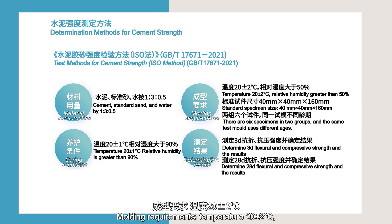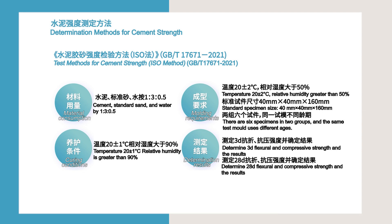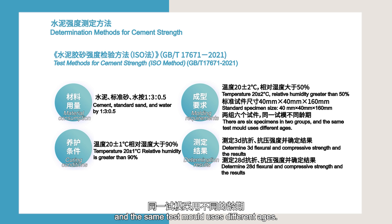Molding requirements: temperature 20 ± 2°C, relative humidity greater than 50%. The standard specimen dimensions are 40 mm × 40 mm × 160 mm. There are six specimens in two groups, and the same test mold uses different ages.